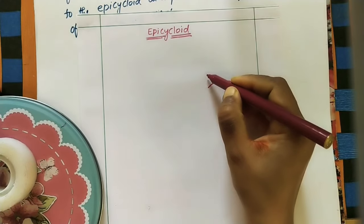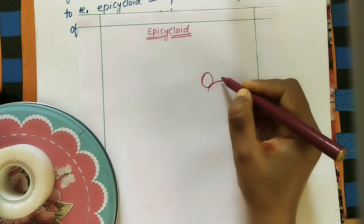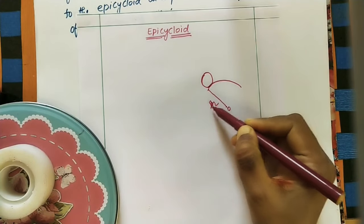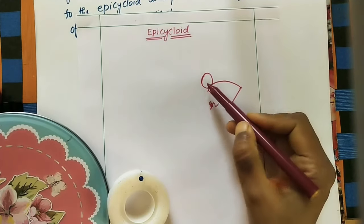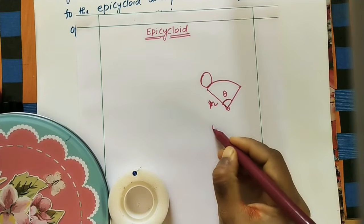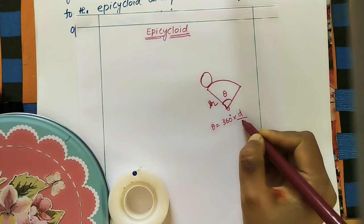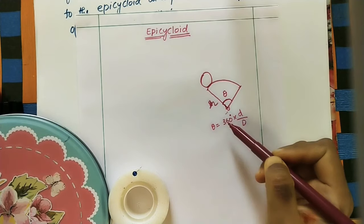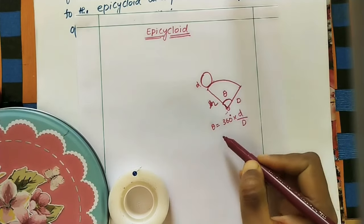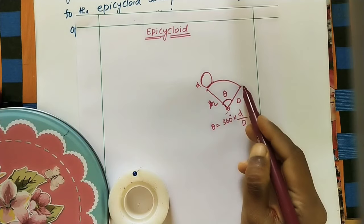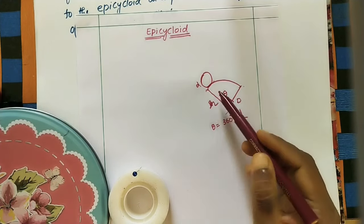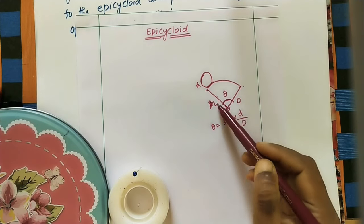For this curved surface, we need one center and one radius or diameter, and with this we draw an arc for one complete rotation of the circle. To find the angle theta for one complete rotation, the formula is: theta equals 360 degrees multiplied by small d divided by capital D, where capital D is the diameter of the bigger directing circle and small d is the diameter of the rolling circle.